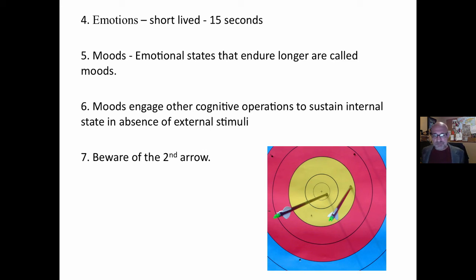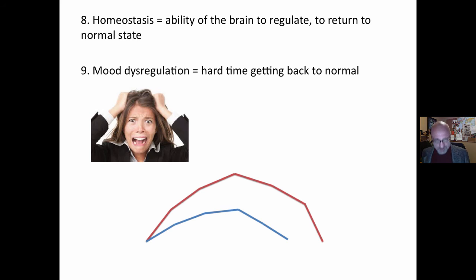Beware of the second arrow. Something makes you angry. You feel angry or hurt the first time, and the more you think about it, you continue to be angry. The first arrow is when it happens, and the second arrow is your continued thought. When you have a negative emotion, you have to let it pass. Beware of the second arrow.